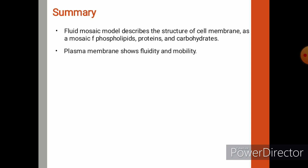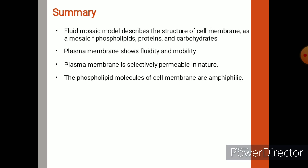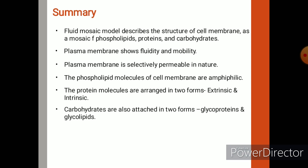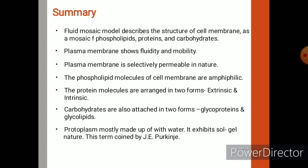According to the fluid mosaic model, the cell membrane contains a mosaic appearance due to the presence of phospholipids, proteins, and carbohydrates. Plasma membrane shows fluidity and mobility — the phospholipid molecules move regularly. The plasma membrane is selectively permeable, allowing only a few substances. Phospholipid molecules are amphiphilic — dual nature, with one hydrophilic surface and one hydrophobic surface. Protein molecules are arranged in two forms: extrinsic and intrinsic. Carbohydrates exist as glycoproteins and glycolipids.